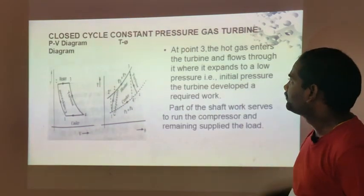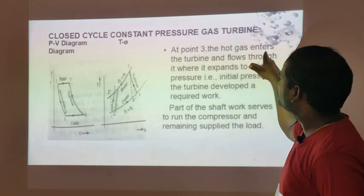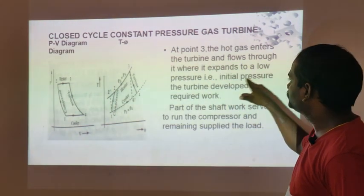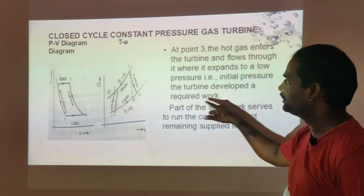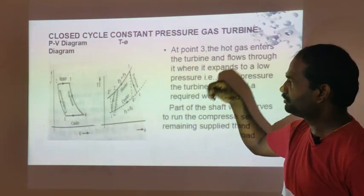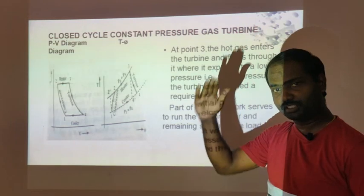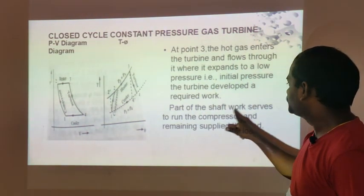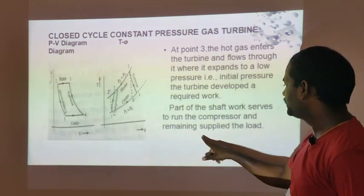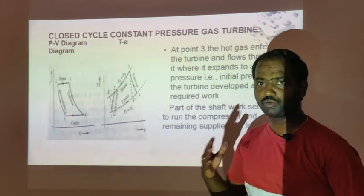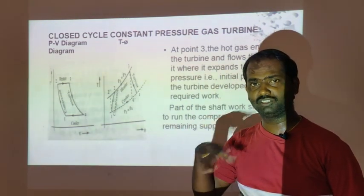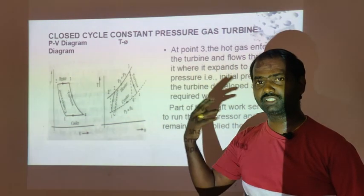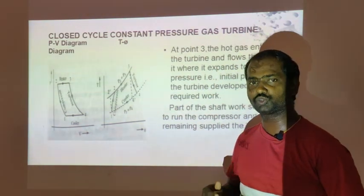At point 3, the hot gases enter the turbine and expand to a low pressure — the initial pressure. Part of the shaft work drives the compressor and the remaining is supplied to the load.